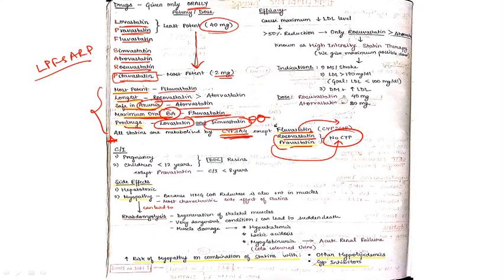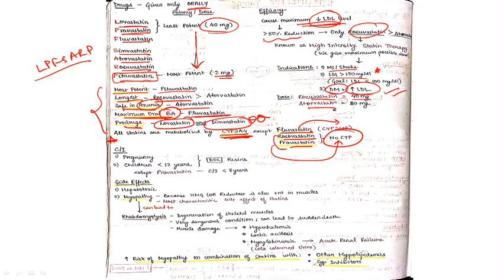Statins cause maximum decrease in LDL level — more than 50% reduction with rosuvastatin. Indications include MI, stroke, LDL level more than 190 mg/dL, patients with diabetes mellitus having increased LDL, and conditions with increased HDL needs. Rosuvastatin doses for primary prevention are typically 40 mg.